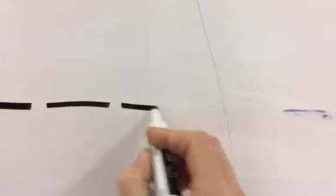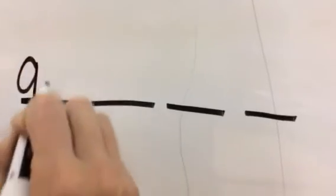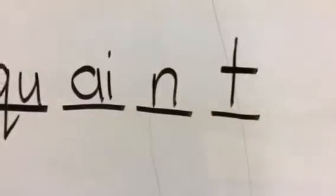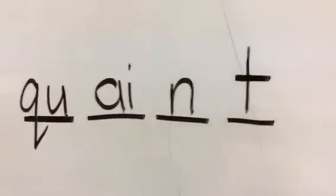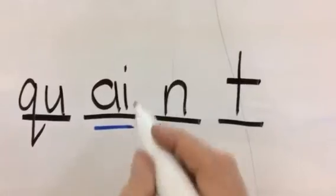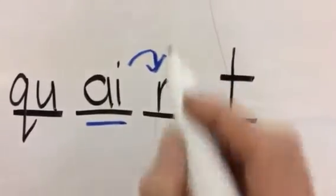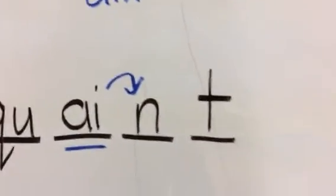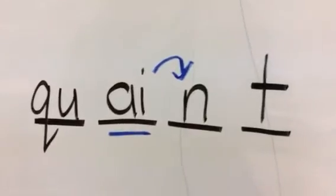Number four, quaint. Quaint. So it's the Qu is Q-U, A-I-N-T. We use the A-I for the sound A. It's in the middle of the word and right after it is an N. And as I mentioned A-I-N they come together frequently. Commonly seen together. Most common.